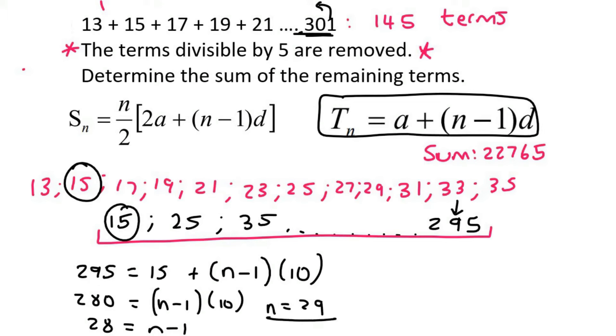So we have 29 terms in our divisible by 5 sequence. So now, what we can do is use this formula to work out the sum of those 29 terms, which would be 29 over 2, 2 times, now A for that sequence is 15, 29 minus 1, and then the common difference in that sequence is 10. And that gives us 4,495.